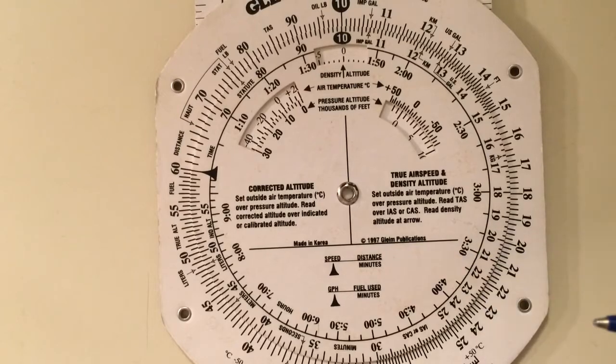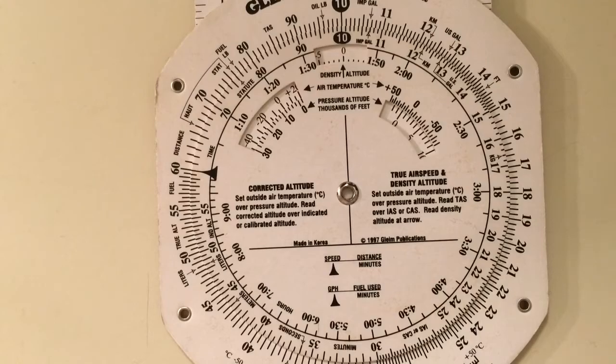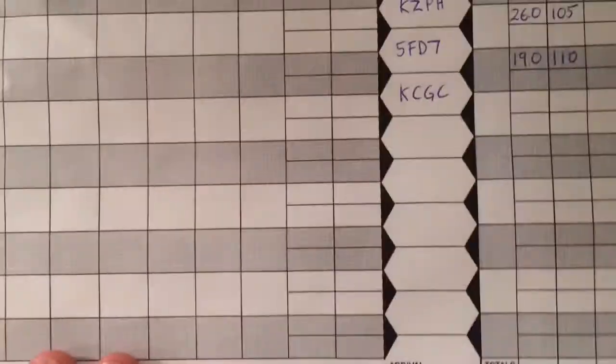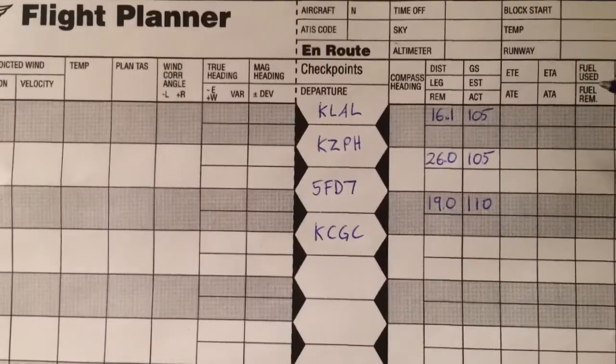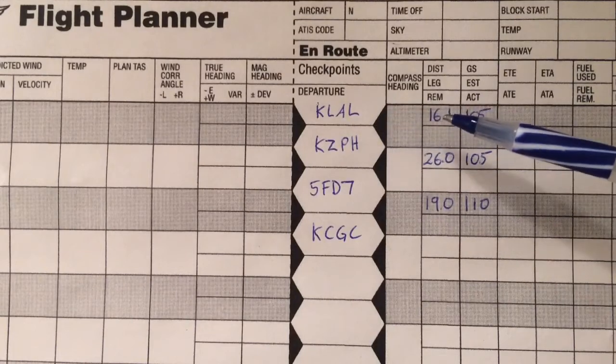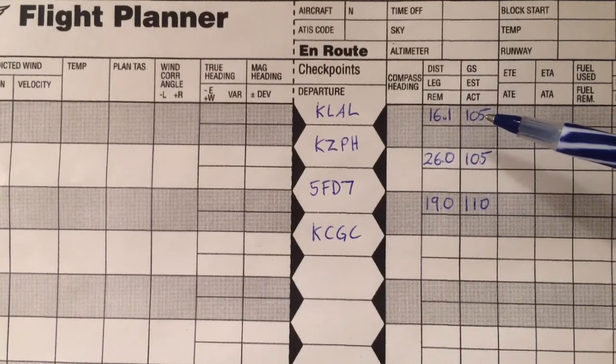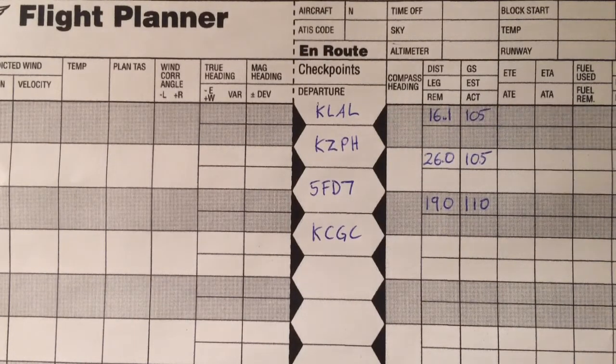You're going to have a distance as measured on the chart, and you're going to have a speed as computed from the wind side of your flight computer. So your uncompleted nav log might look something like this. You have your waypoints defined, you have distances between them, and you've computed a ground speed using the wind side of your E6B.